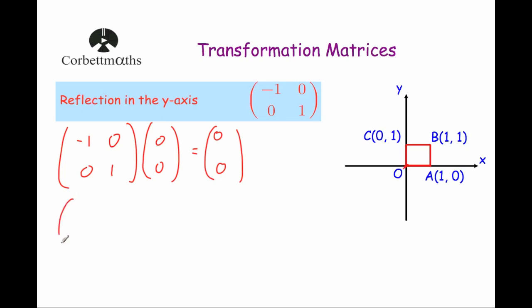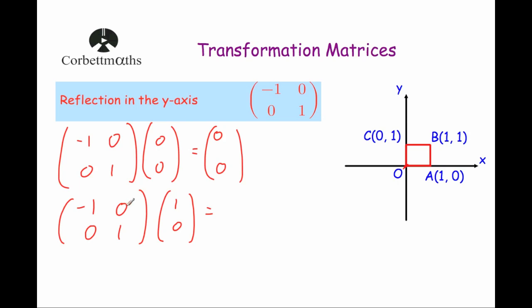Next, the point A. So if we take the matrix again, minus 1, 0, 0, 1, and multiply it with the point at A, which is 1, 0, we get minus 1 times 1 is minus 1, 0 times 0 is 0, adding them together is minus 1.